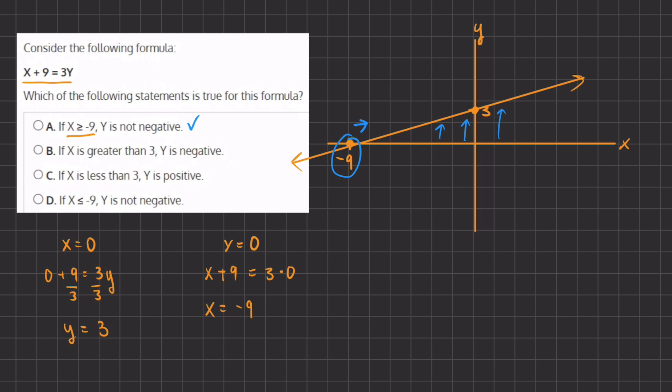All right, now let's read over B, C, and D and see why they are incorrect. B states that if x is greater than 3, so greater than 3 is around here, going this direction, then y is negative. Well, we see that all the y values are positive once we cross this negative 9 over here. All the y values become positive, and therefore B is incorrect, and we can move on to C.